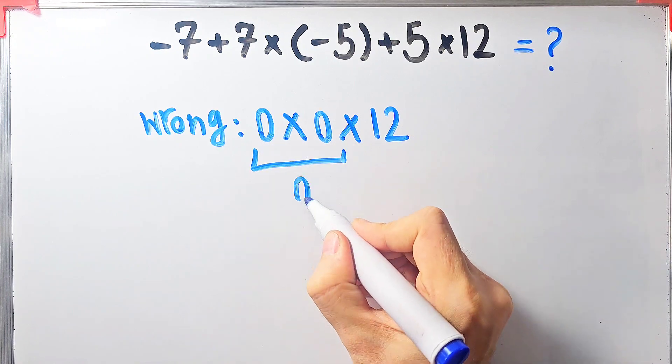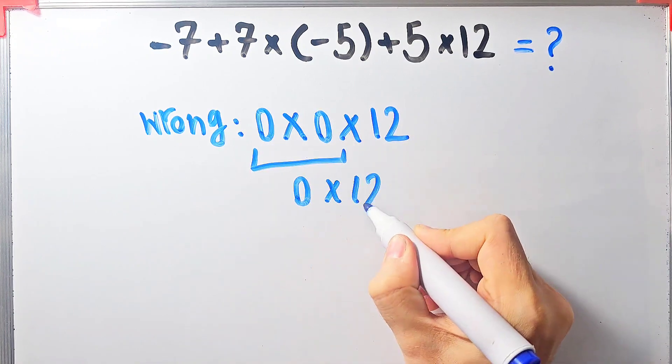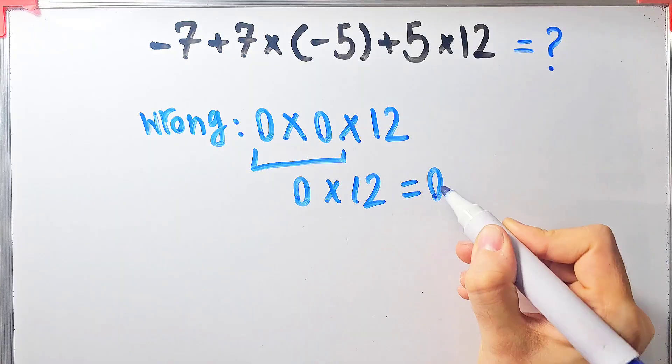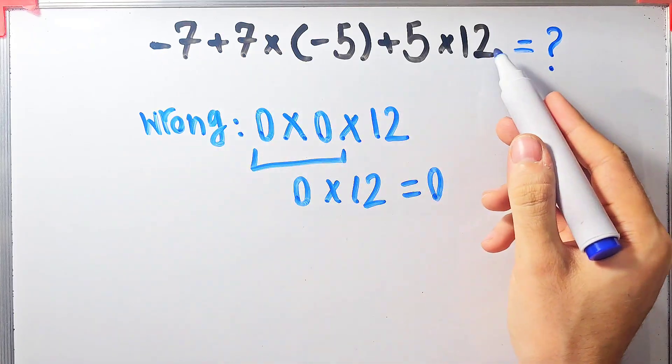Zero times zero equals zero, and zero times twelve equals zero. They say the final answer of this question equals zero.